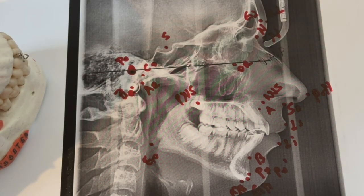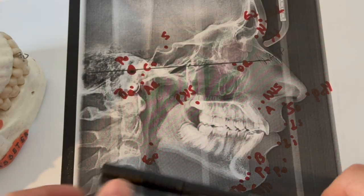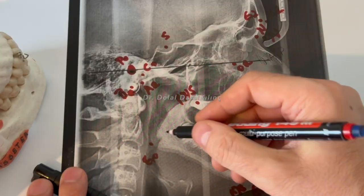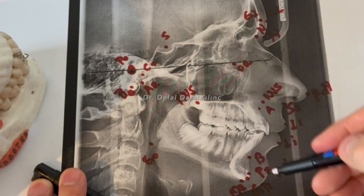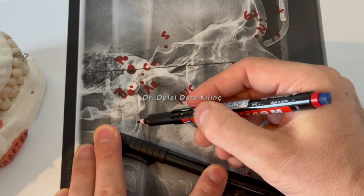Now let's draw the other two most used planes in orthodontics. One of them is the Gonion-Menton, the mandibular plane, just passing through from the point Gonion and point Menton. It's here, Gonion-Menton.